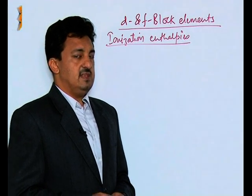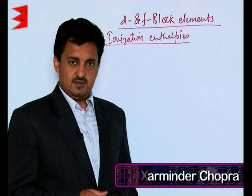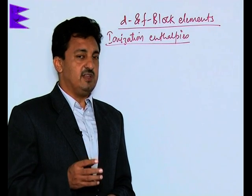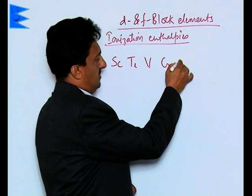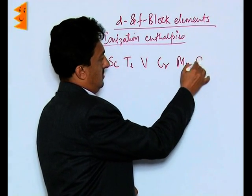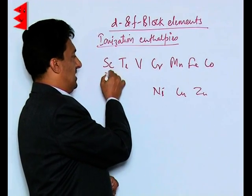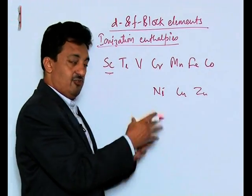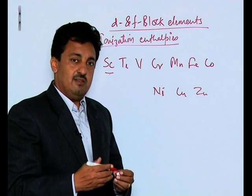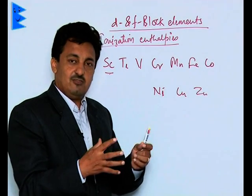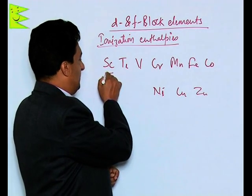The ionization enthalpies of d-block elements, particularly in the 3d series, are very high because of the poor screening of the 3d electrons. From scandium, the ionization enthalpies show the usual trend — they increase across the series because nuclear charge keeps increasing while electrons are added to the same subshell. The size remains almost the same, so ionization enthalpy increases from scandium to vanadium.